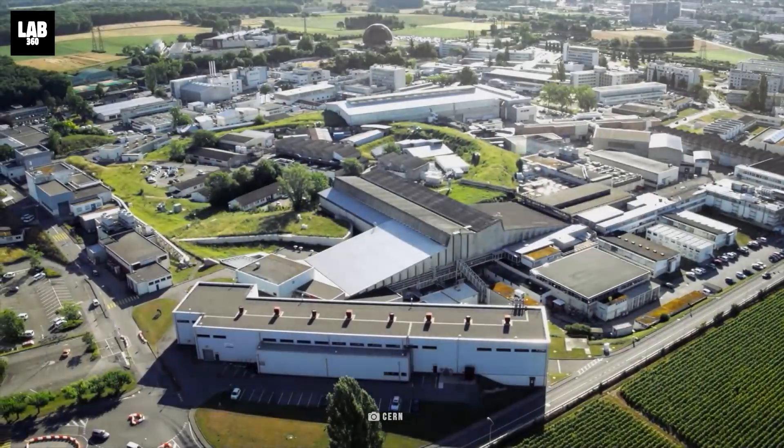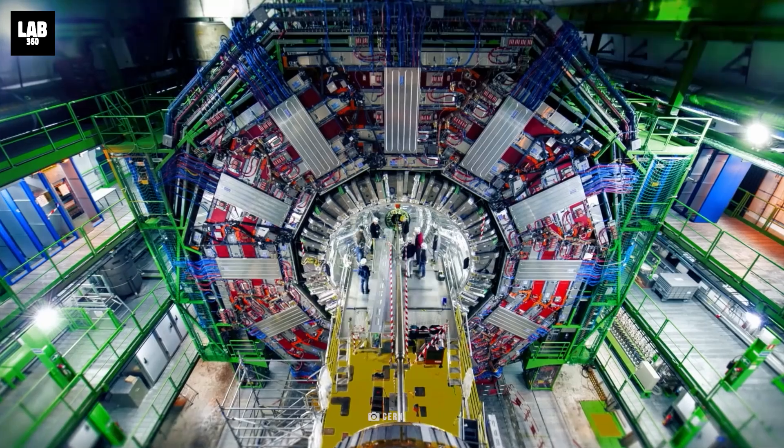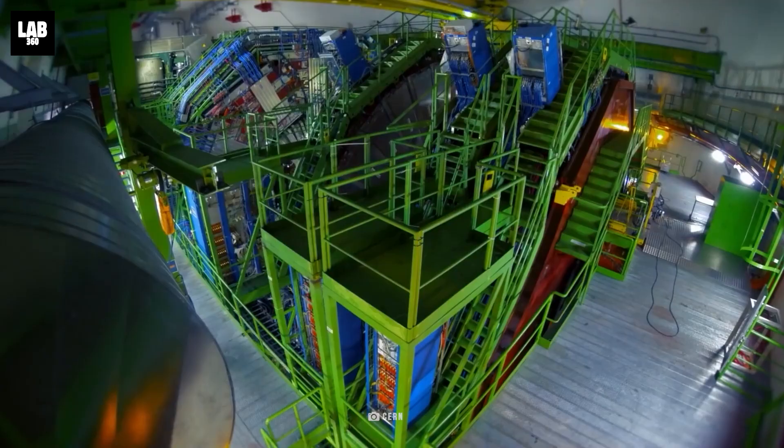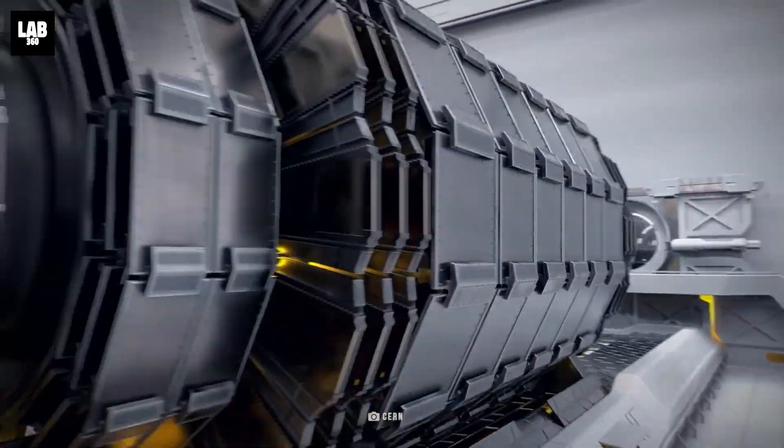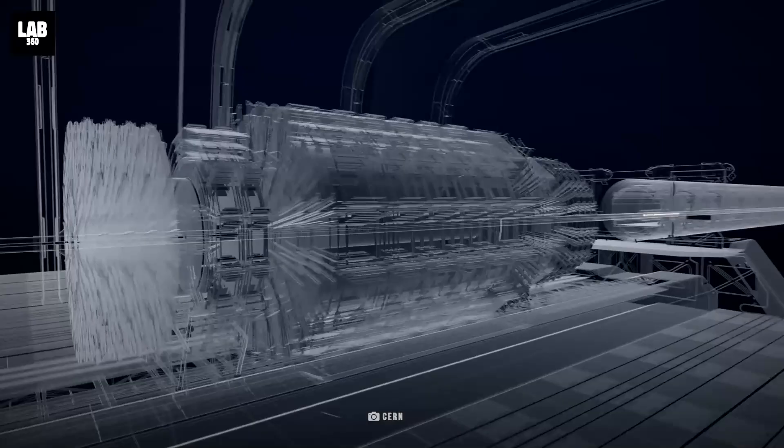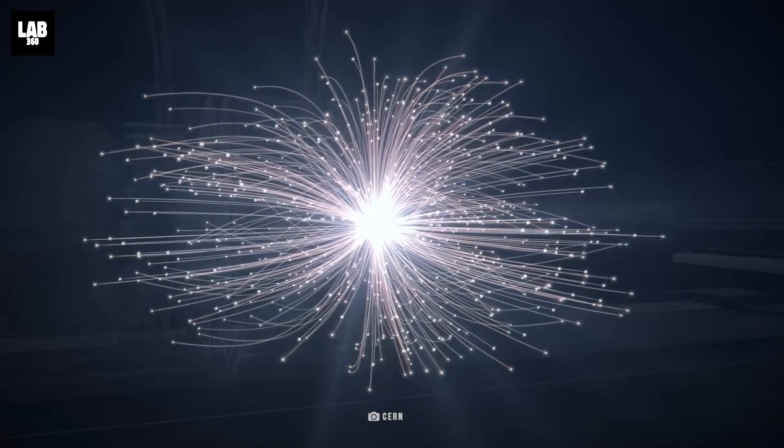Located underground between the borders of France and Switzerland at CERN, the Large Hadron Collider is the world's most powerful particle accelerator. The giant donut-shaped collider uses superconducting magnets and beams of protons to smash known particles together at extremely high energies.